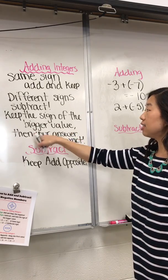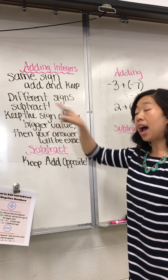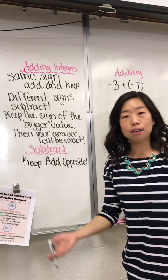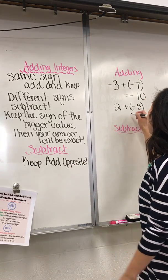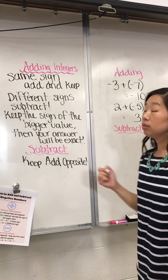Since they are different signs, we are going to subtract. We're going to take five minus two and we're going to get three.